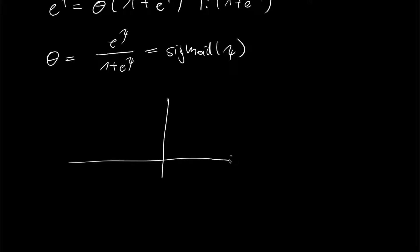It looks something like this. We have psi on the x-axis and theta on the y-axis. The sigmoid crosses the y-axis at 0.5, and at minus infinity it is 0, and at plus infinity it is 1.